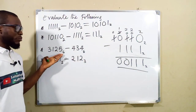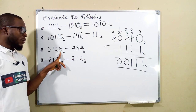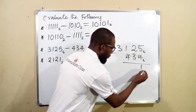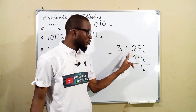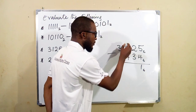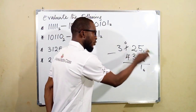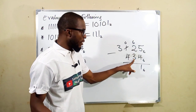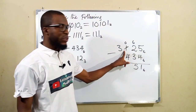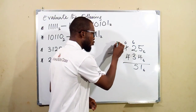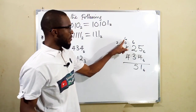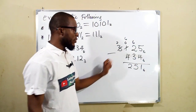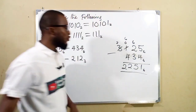Now we have numbers in base 6. The highest digit we can have is 5 — we will never have 6 here. Starting from the right: 5 minus 4 is 1. Then 2 minus 3 — we have to borrow; one bundle comes as 6, so 6 plus 2 is 8, and 8 minus 3 is 5. Next, we have 0, so we borrow one bundle from the next position, leaving two bundles. 6 plus 0 is 6, and 6 minus 4 is 2. Finally, 2 bundles minus nothing is still 2. The result is 2251 in base 6.